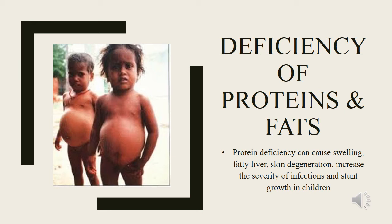Deficiency of Protein and Fats. Proteins are large molecules that our cells need to function properly. They consist of amino acids. The structure and function of our body depends on protein. The regulation of body cells, tissues and organs cannot happen without them. Protein deficiency, or lack of protein due to low intake in the diet, can cause swelling, fatty liver, skin degeneration, increased risk of infection, and stunted growth in children.